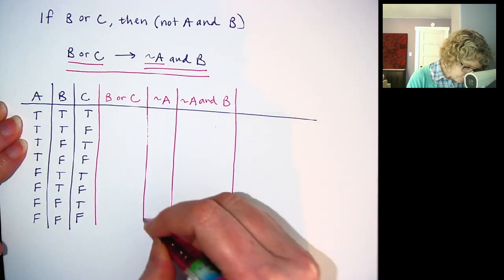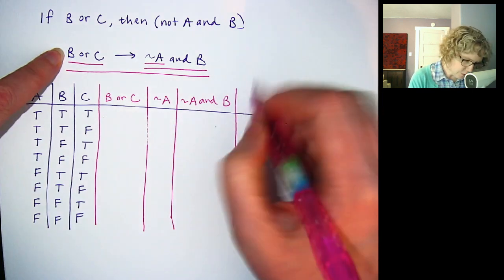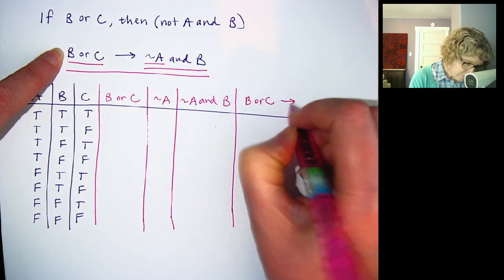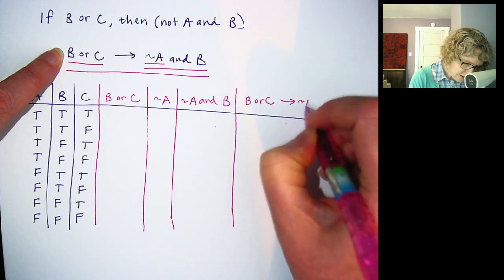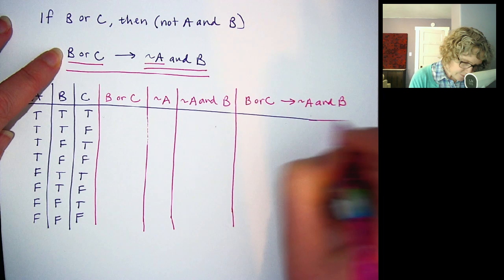And then the last column is going to be our final statement. This is a little longer. Okay, so the last one will be, I'll just use the shorter version here. B or C, if B or C, then, not A and B.